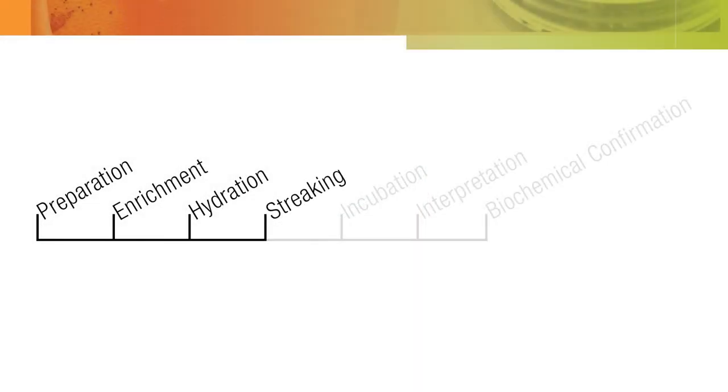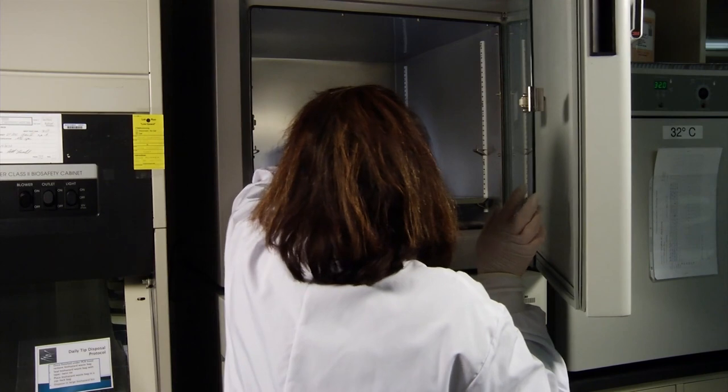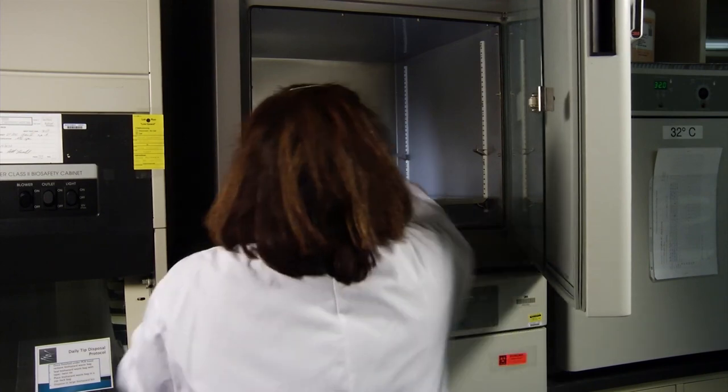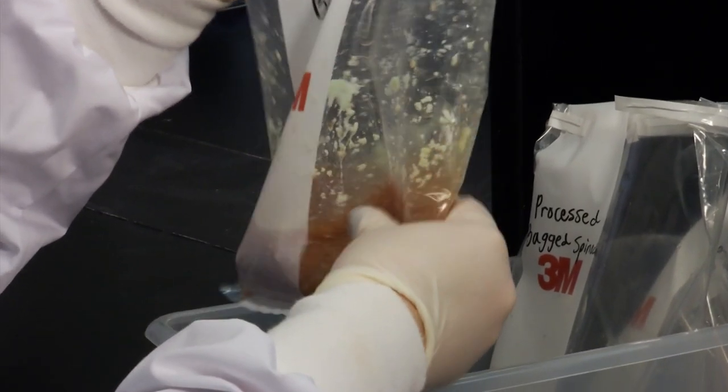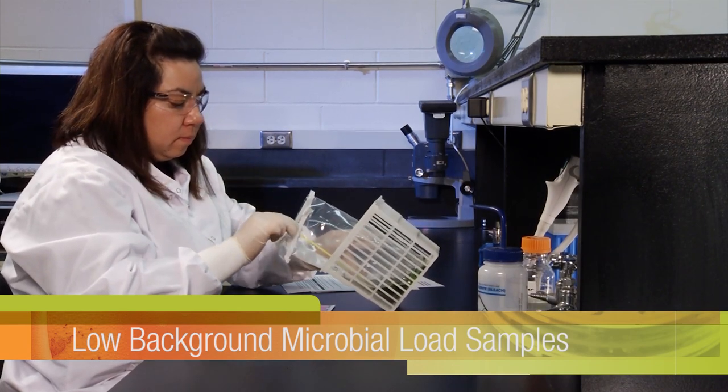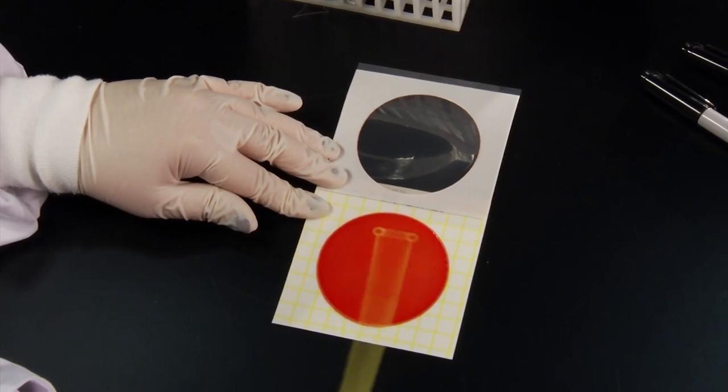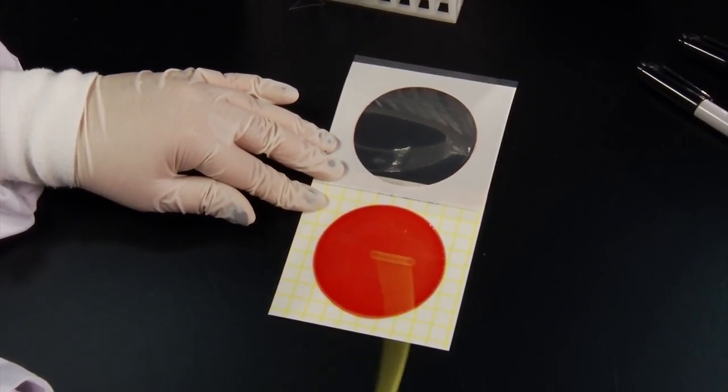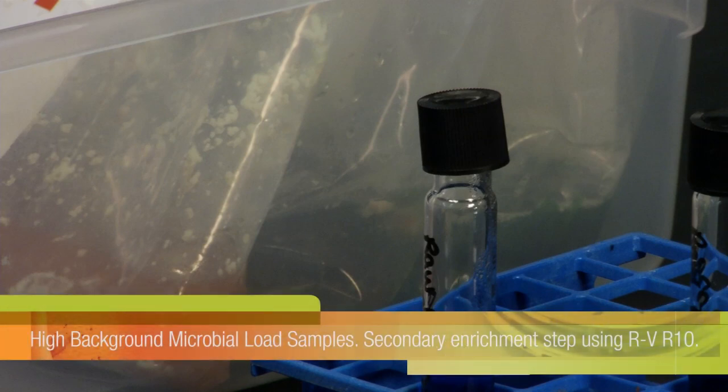The next step is streaking your enriched product samples onto the pre-hydrated 3M PetriFilm Salmonella Express Plate. Remove the enrichment medium from the incubator after the required incubation period and agitate its contents by hand. For low background microbial load samples, proceed directly with streaking the enriched sample onto a hydrated plate. For high background microbial load samples, perform a secondary enrichment step.